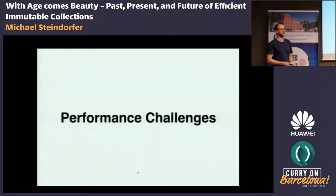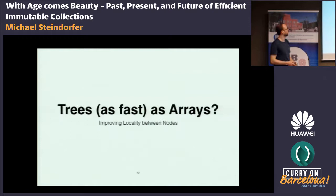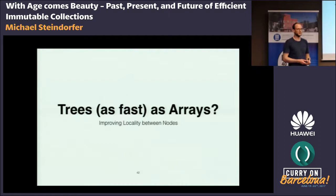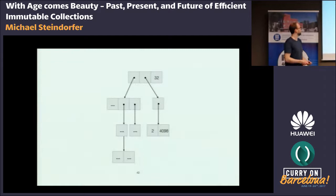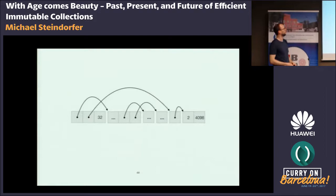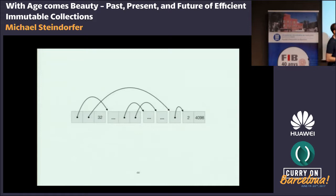How performant are these data structures, and what's challenging about them? Is there a difference between flat array data structures and trees? There is a difference: there are more indirections happening to locate an element — it's a small logarithmic operation rather than a constant-time operation. One thing you can do is improve the locality between nodes. Instead of the pointer-based tree representation, you could think about a serialized or linearized representation of the tree where all your data is contiguous in memory, making only logarithmic jumps forward to locate your data item.